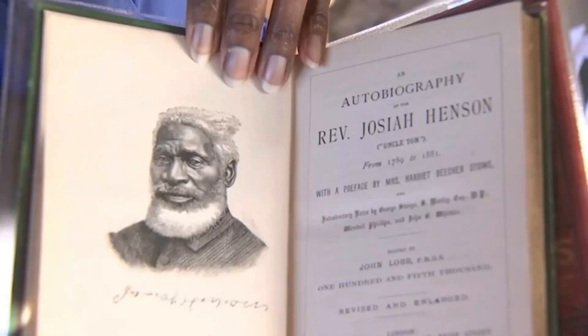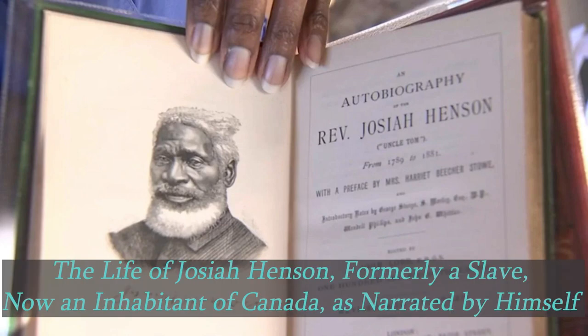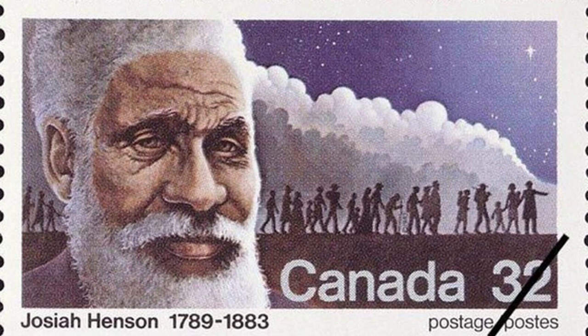Stowe drew inspiration for her novel from the real-life experiences of self-emancipated people. Uncle Tom is said to have been crafted from the life of Josiah Henson, who published his own narrative in his autobiography, The Life of Josiah Henson, Formerly a Slave, Now an Inhabitant of Canada, as Narrated by Himself, published in 1849. Henson spent most of his life as an enslaved man in Maryland and Kentucky before running away with his entire family to Canada, where he lived out his days in tranquility and helped other self-emancipated people settle down.